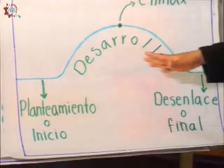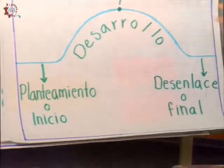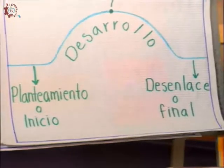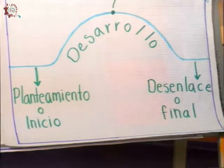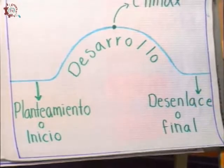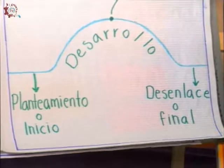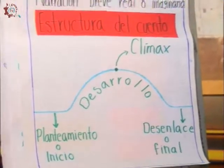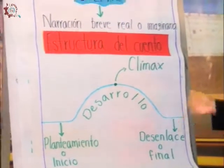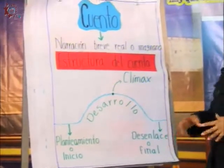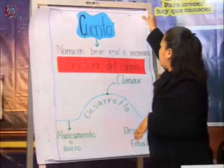El desarrollo sería todo el conjunto de las acciones en las que intervienen los personajes, y es en este desarrollo donde se presenta el clímax, que es el momento de mayor tensión que enfrentan los personajes o el problema al que se enfrentan en la historia. El desenlace es el momento en el que se soluciona la problemática que enfrentaron los personajes y se llega al final de la historia. Aunque podemos encontrar cuentos que nos dejen el final a nuestra imaginación, donde el autor decidió dejar la historia incompleta y darle esa tarea al lector.